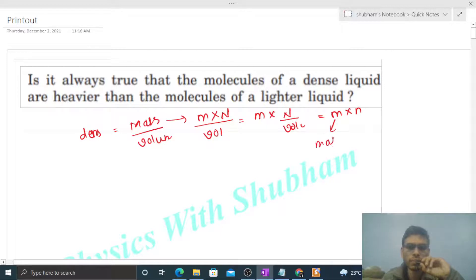Small m is the mass of one molecule, and small n is the number of molecules per unit volume. This depends on packing.